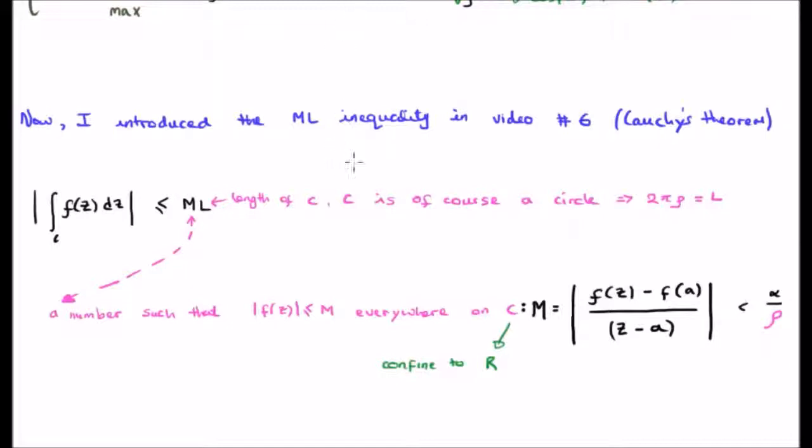Now it's a closed contour integral around a circle so the length of course is going to be twice pi times the radius. The radius is rho so the value for L is twice pi times rho.